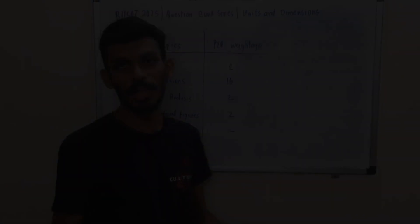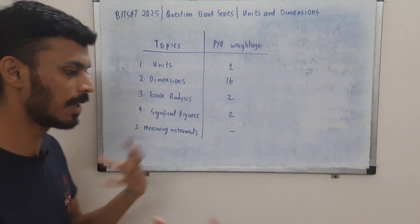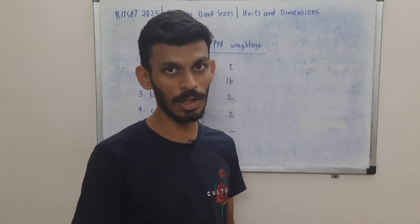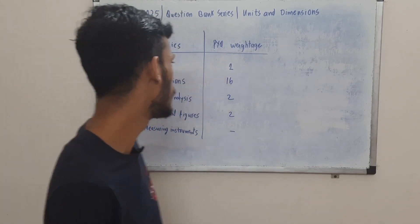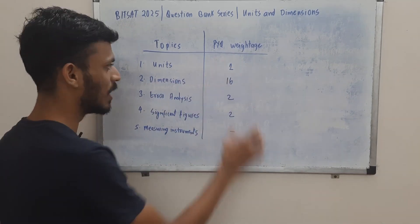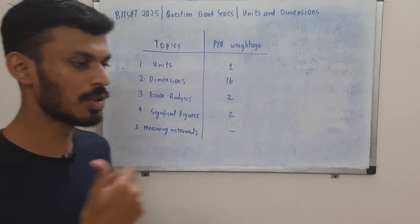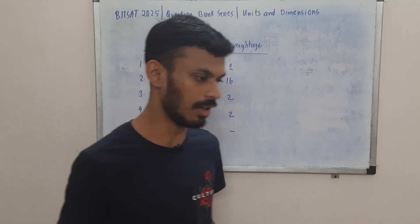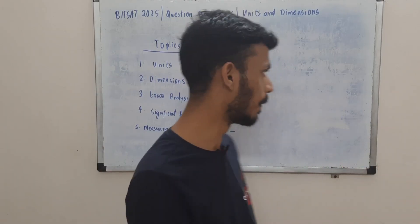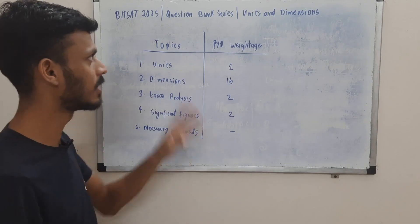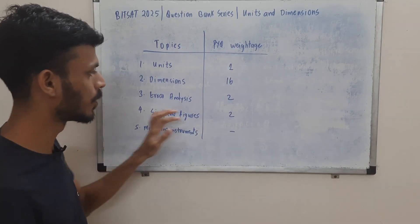Let's go through the topic-wise PYQ weightage for the chapter of Units and Dimensions. From units, they might ask you to tell the unit of a particular physical quantity — only one question was asked — or they can ask for unit conversion using N1U1 = N2U2. The most important topic in this chapter is dimensions: sixteen questions were asked from this particular topic. They might ask you for dimensional consistency or to find the dimensions of a physical quantity given that it depends on certain other physical quantities.